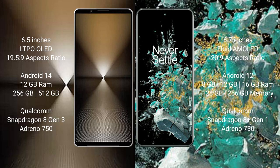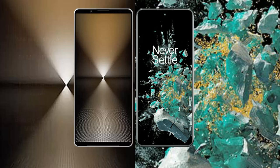Sony Xperia 1 Mark 6 comes with 12 GB RAM and 512 GB or 1 TB internal storage, with a Qualcomm Snapdragon 8 Gen 3 processor and Adreno 750 GPU. OnePlus 10T comes with 8 GB, 12 GB, or 16 GB RAM and 128 GB or 256 GB internal storage, with a Qualcomm Snapdragon 8 Gen 1 processor and Adreno 730 GPU.